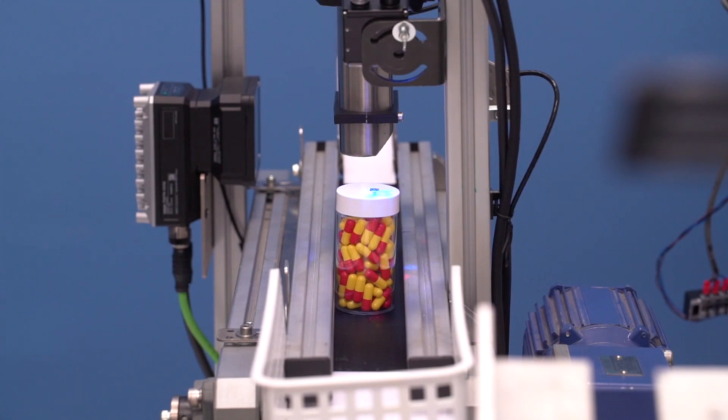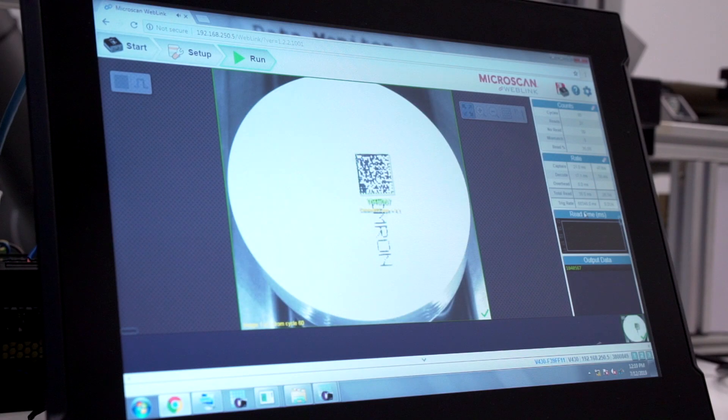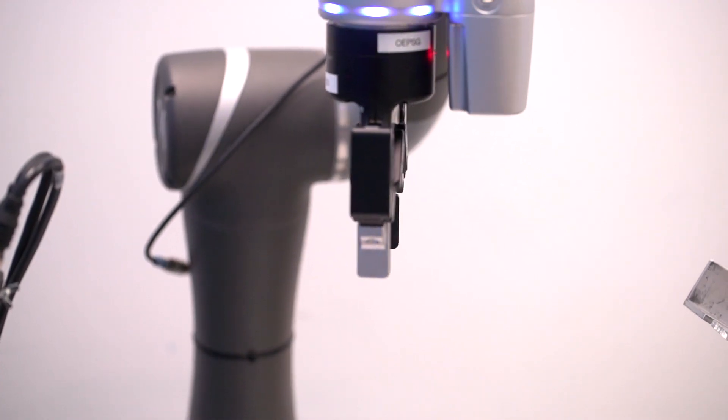After printing, the code is then validated and verified using Omron's code reader. The data is sent seamlessly to Omron Industrial PC and matched with the respective serial numbers.